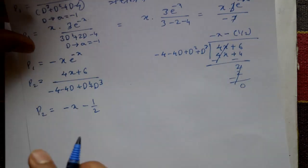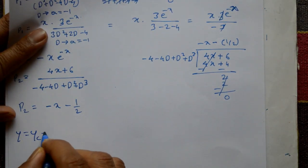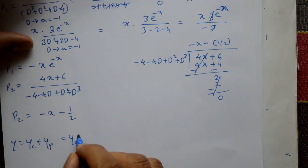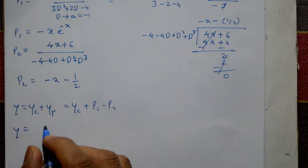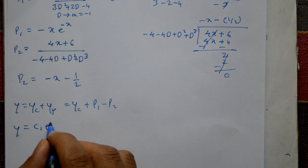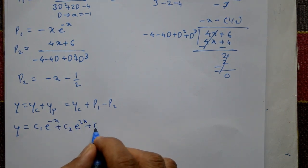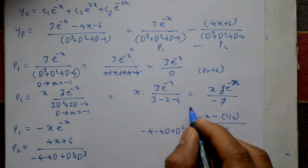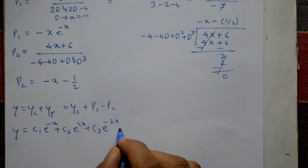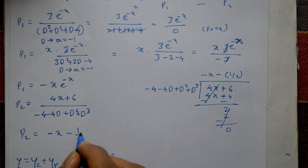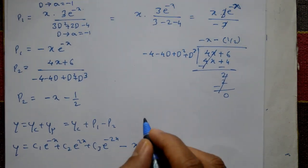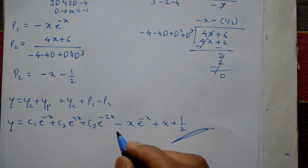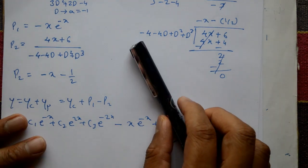The complete general solution is y = yc + yp, where yp = P1 - P2. Writing it out: y = c₁e^(-x) + c₂e^(2x) + c₃e^(-2x) - xe^(-x) - (-x - 1/2), which simplifies to y = c₁e^(-x) + c₂e^(2x) + c₃e^(-2x) - xe^(-x) + x + 1/2. Please subscribe, comment, and like.